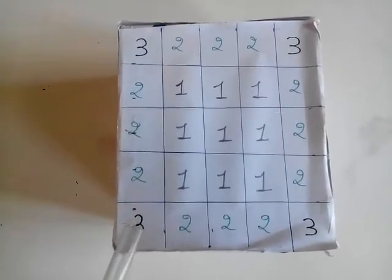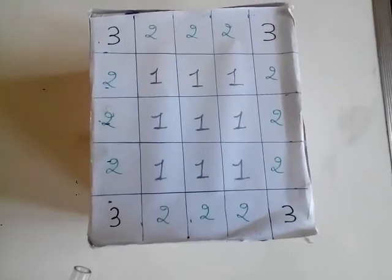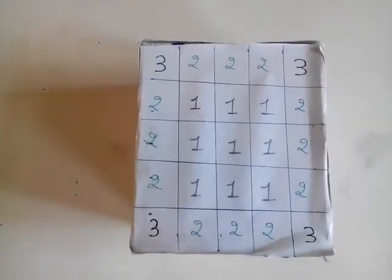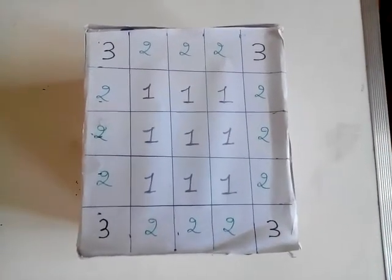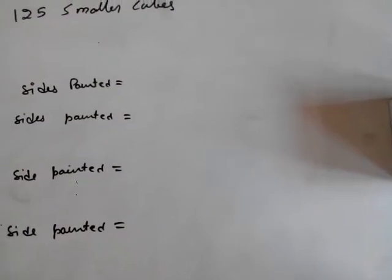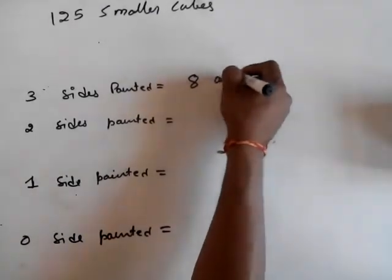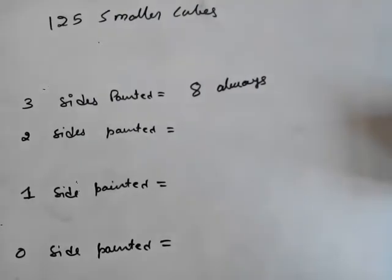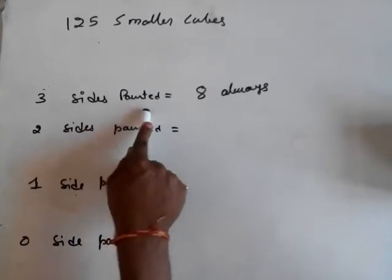This is the cube at the corner — it has a 1st face, 2nd face, and 3rd face. These 3 are the faces which are painted. Same is the case with the other corner cubes. So, the cubes which are at the corner will have their 3 faces painted. We have 8 cubes at the corners, so the total number of cubes with 3 sides painted is 8. This will always be 8, no matter how big or small the cube is, because every cube has only 8 corners.